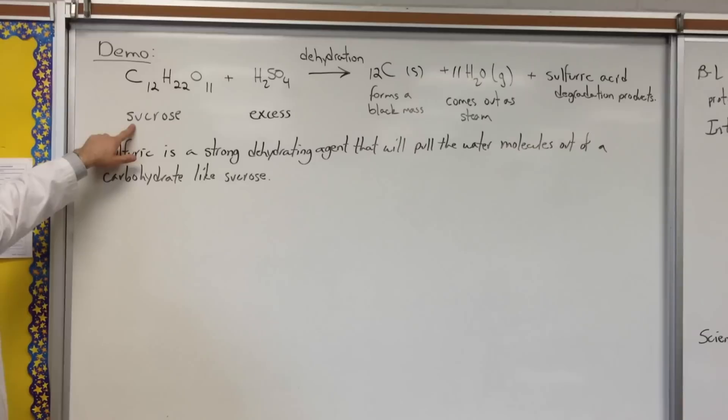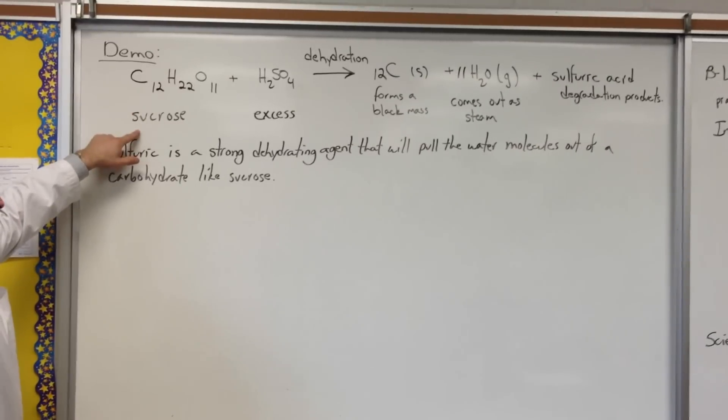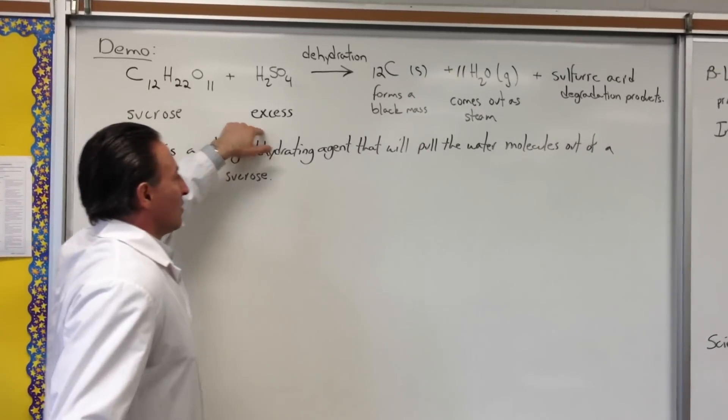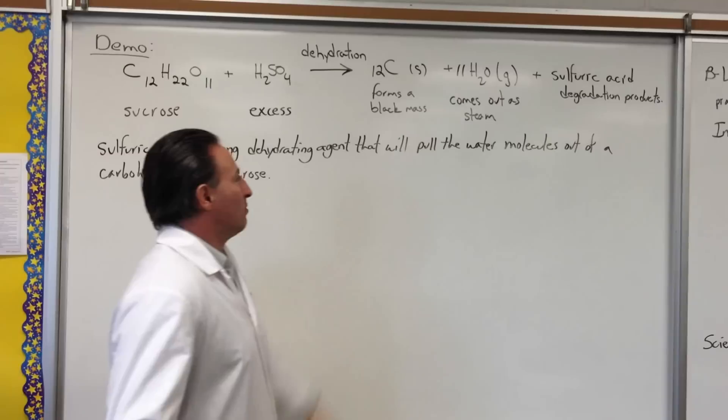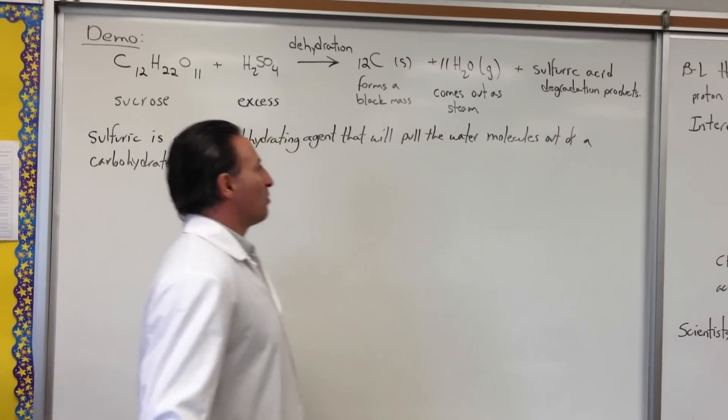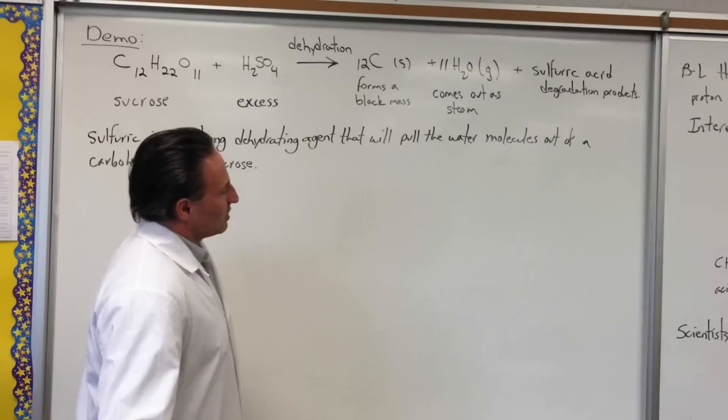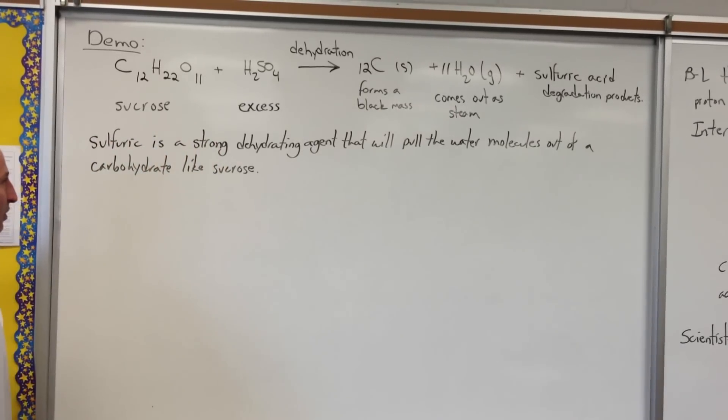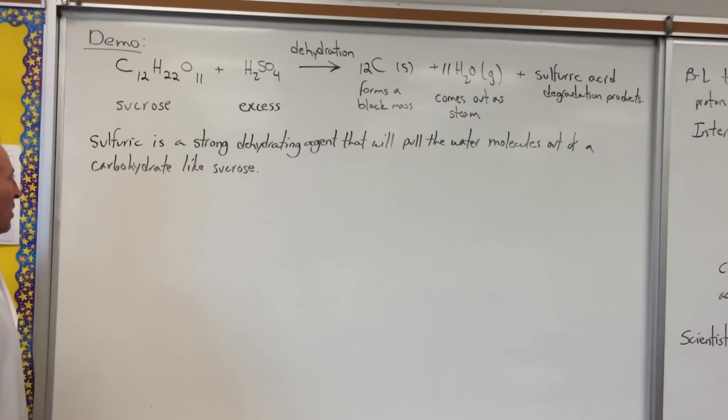Now you can reverse the process by taking sucrose, which is what we call table sugar, adding an excess of sulfuric acid, and what we'll get is a black mass of carbon. The water will come out in the form of steam, and you'll probably get various degradation products of sulfuric acid, if we can judge by the smell.